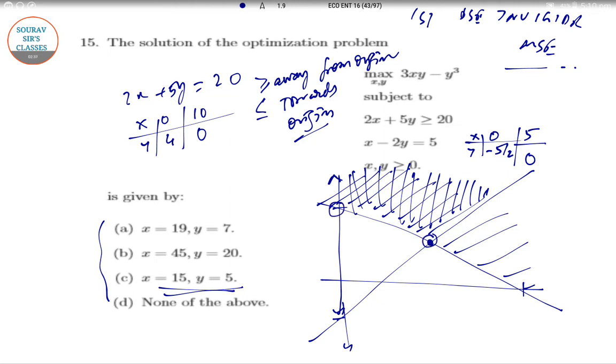Now there is an intersection point over here. You can solve these two equations 2x plus 5y. This will also give you the solution. If you just solve it, so 2x plus 5y equal to 20 and 2x minus 4y equal to 10, if you subtract it, this will give you 9y equal to 30, so y equals 30 by 9.